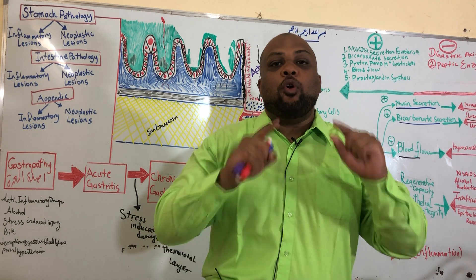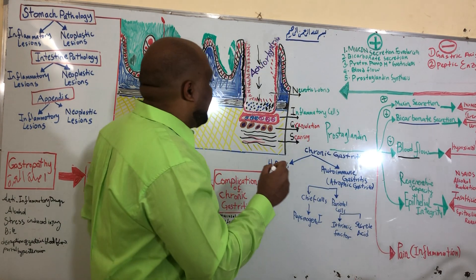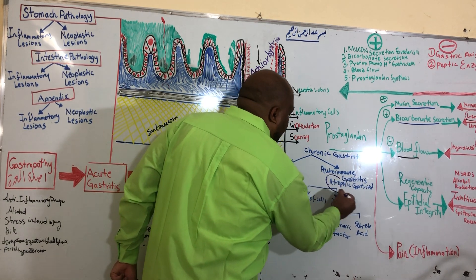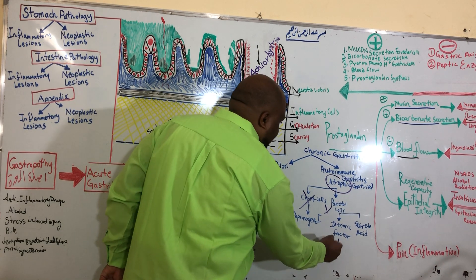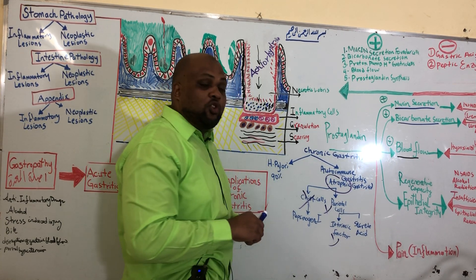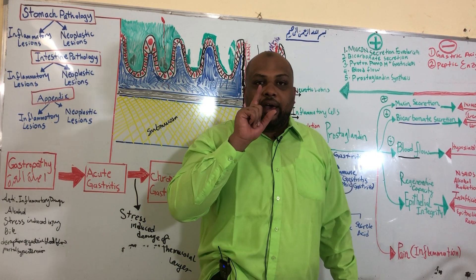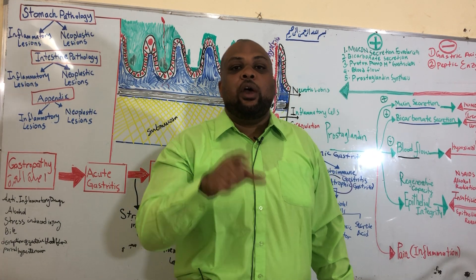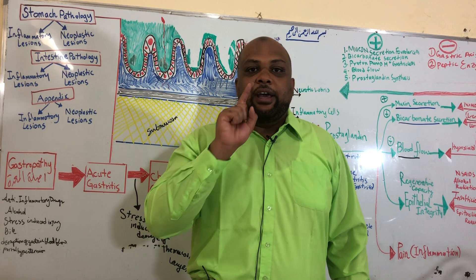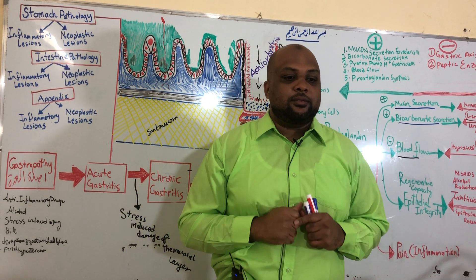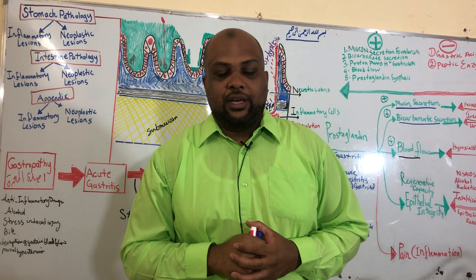The other name for autoimmune chronic gastritis is atrophic gastritis. It is called atrophic because chief cells are destroyed, parietal cells are destroyed, intrinsic factor is lost, and acid secretion is lost — so much damage to the cells and tissues of the stomach leads to overall atrophy. Atrophic gastritis is exclusive to autoimmune gastritis. This is a first step in our discussion as we move on to learn more about autoimmune gastritis.